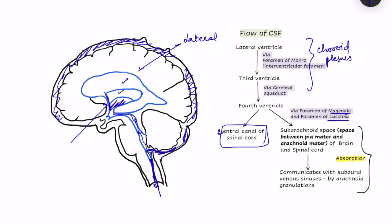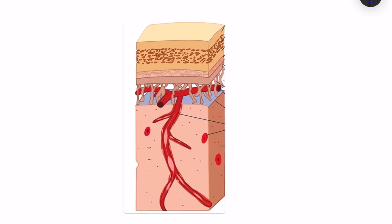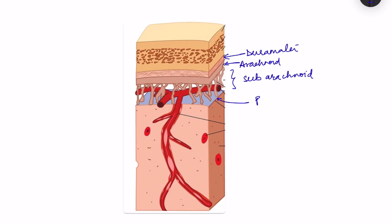CSF also has to be absorbed. Here we see a diagram showing the meninges: the dura mater is there, then the arachnoid mater — between them there is very little space, they are almost close together. Below the arachnoid is the subarachnoid space, where the CSF is present. The pia mater layer continues around the blood vessels present in the subarachnoid space.